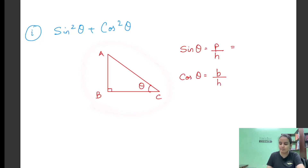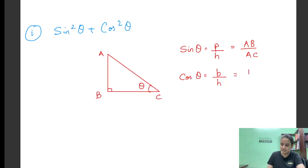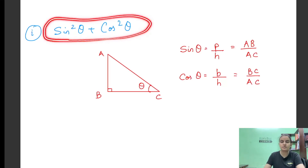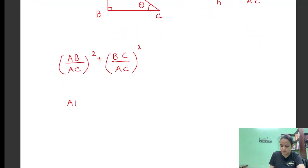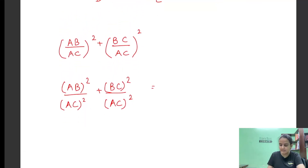तो इस triangle को refer करें, तो यहां पर P मतलब perpendicular, which is nothing but side AB, and hypotenuse क्या हो गया — side AC। Similarly, यहां पर base हो गया side BC, and hypotenuse हो गया side AC। तो अब sin²θ + cos²θ की value find करेंगे, तो यह हो जाएगा: (AB/AC)² + (BC/AC)² = AB²/AC² + BC²/AC²। LCM लेके simplify करें तो नीचे AC² है, और ऊपर में AB² + BC²।